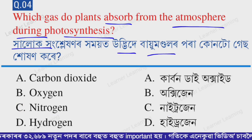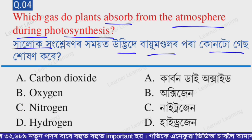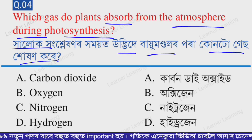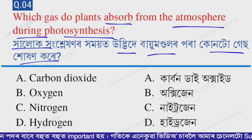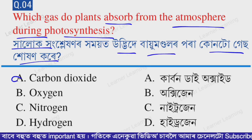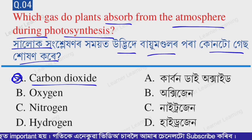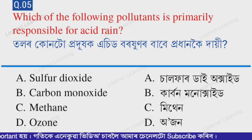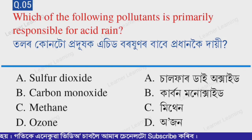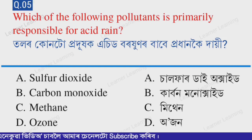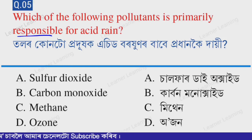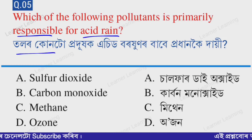The correct option is option A — carbon dioxide. Plants absorb carbon dioxide during photosynthesis. Next question: Which of the following pollutants is primarily responsible for acid rain?